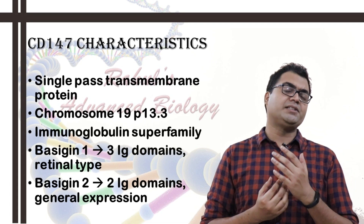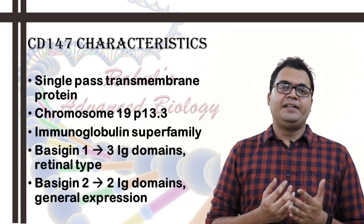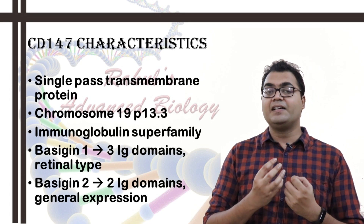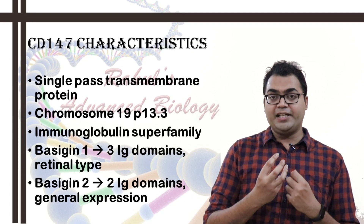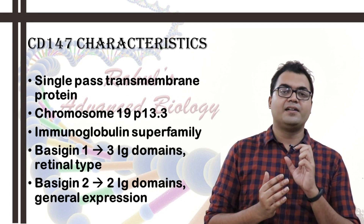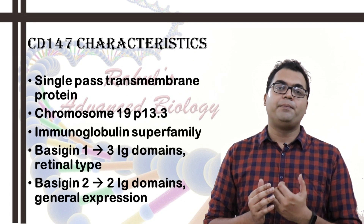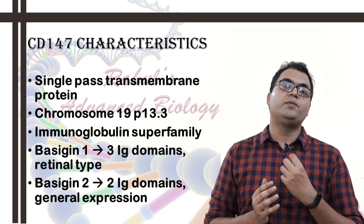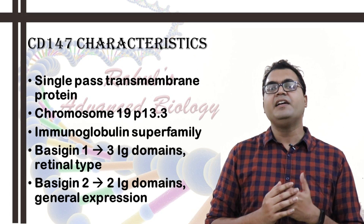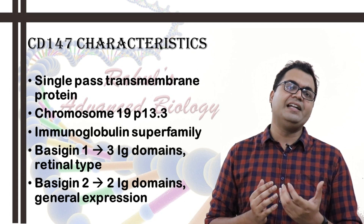Specific cell types which do not express ACE2 but which do express CD147 — like T cells, dendritic cells, and some epithelial cells at the basal surface — make CD147 a very attractive target for SARS-CoV-2 entry. If we can curb this specific receptor, we could curtail this pandemic and the severity of COVID-19 disease. We could also, to an extent, reduce ARDS — the acute respiratory distress syndrome — and the viral sepsis that follows in critically ill COVID-19 patients.